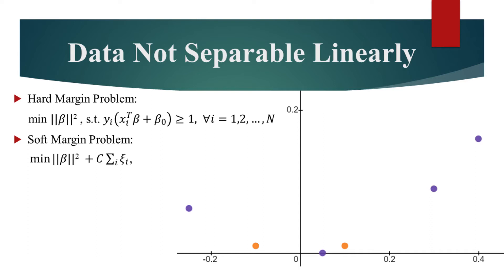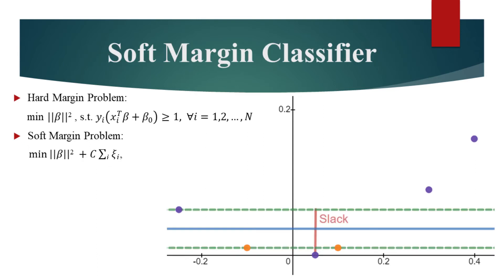It measures the distance from the margin to the wrong side. For example, if we had this blue hyperplane, the slack of the violet data point on the wrong side of the margin would be as it is shown in red. Back to the objective function,